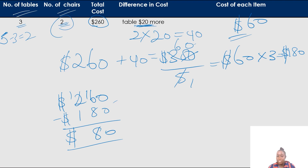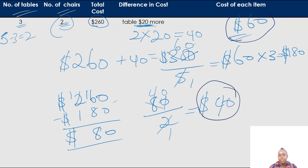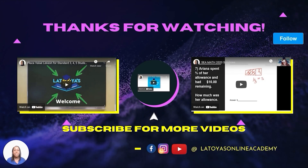If I want to find the cost of one chair, I divide $80 by two. Two into two is one, two into eight is four, two into zero is zero. So the cost of one chair is $40. We got what they asked for — the cost of one table is $60 and the cost of one chair is $40. That's it for this lesson. Subscribe to my YouTube channel at Latoya's Online.